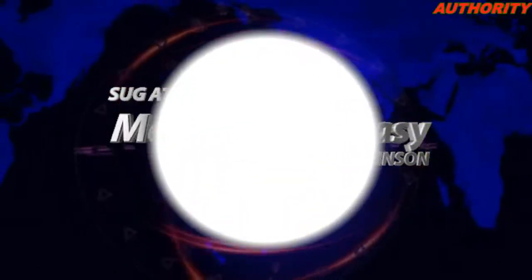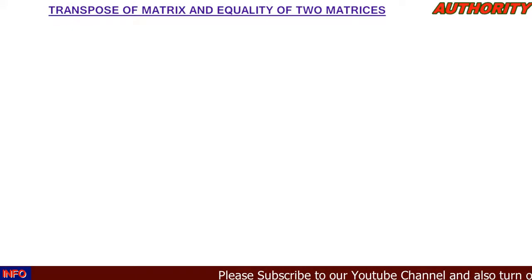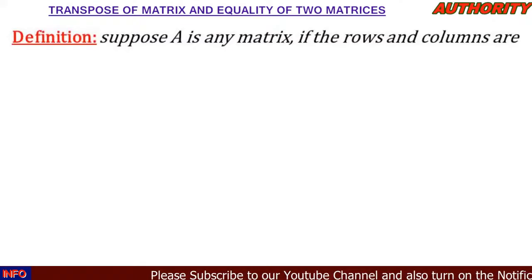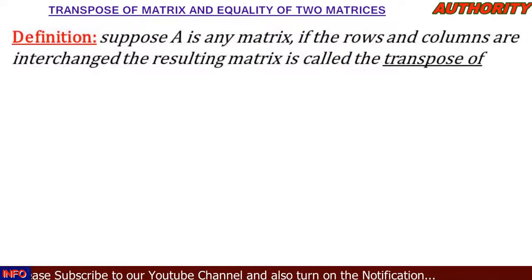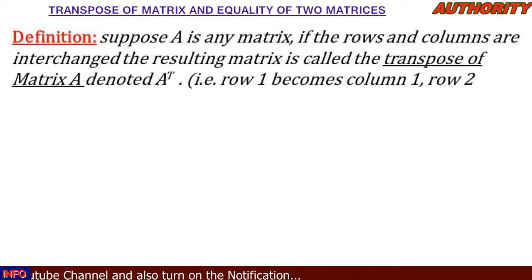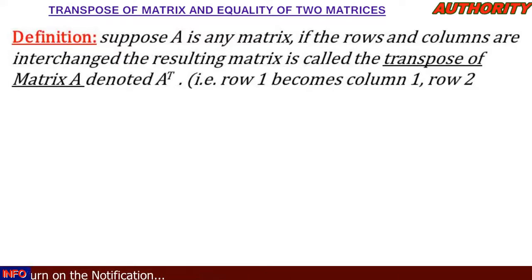Today let's talk about the transpose of a matrix and equality of two matrices. When talking about the transpose of a matrix, we say that suppose A is any matrix — if the rows and columns are interchanged, the resulting matrix is called the transpose of matrix A, denoted A prime or A^T. Row one becomes column one, row two becomes column two, and so on.